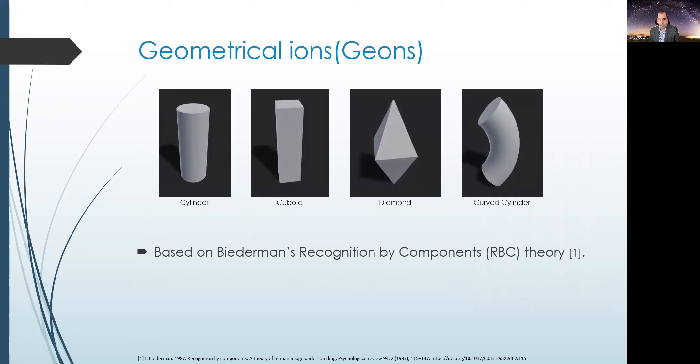Before we start, in order to understand what the GBO is, we need to understand what Geons are. Full name is geometrical ions, and they are symmetrical volumes without sharp concavities characterized by axis and the cross-section, typically at the right angle of the axis. They are based on Biedermann's recognition by components theory. Basically, the unique combination of Geons and their positional relation to each other creates a visual object that we call a Geon-Based Object.